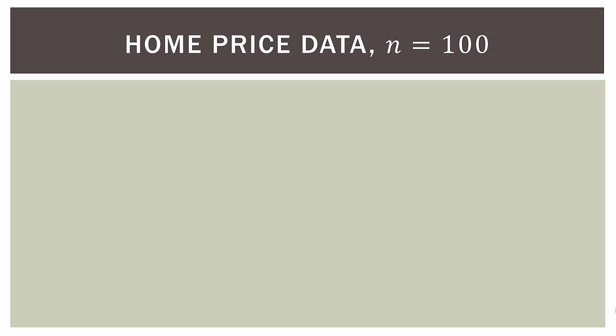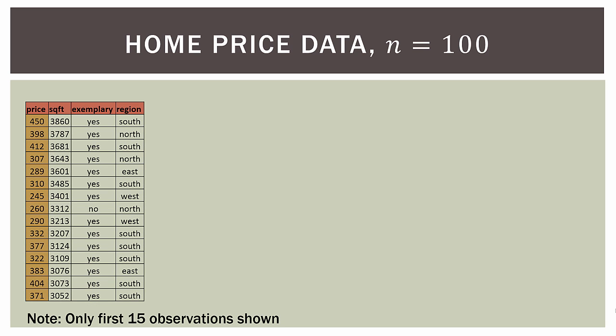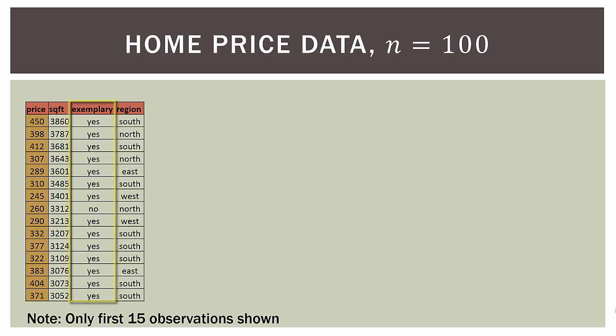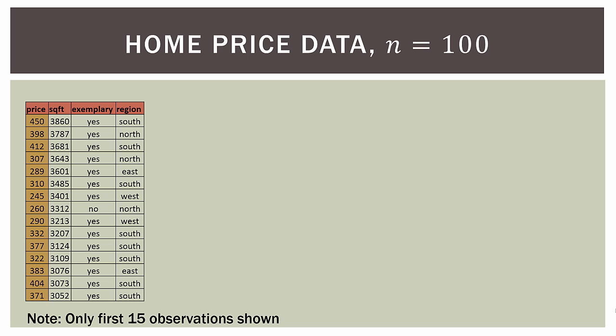In this problem we are going to use 100 fictitious observations — I did make up this data for this video. Here are the first 15 observations. In the first column we have our dependent variable, which is price — the first home is $450,000 US dollars. In the second column we have our first independent variable, square footage — that first home is 3,860 square feet, a very big home. In the third column we have our second independent variable: whether or not the high school is exemplary — yes or no. In the fourth column we have our third independent variable, which is region: north, south, east, or west. That's how our data was originally collected.